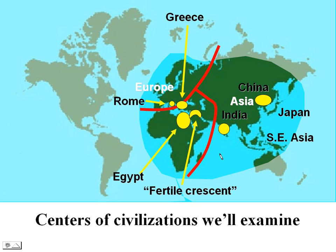Here's another way of looking at things. I've drawn shapes to represent the different areas we've talked about: Egypt, the Fertile Crescent, Greece, and the city of Rome. You can see all of these are centered around the Mediterranean.